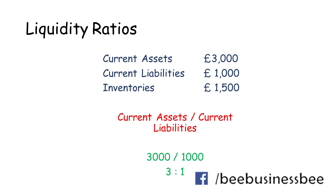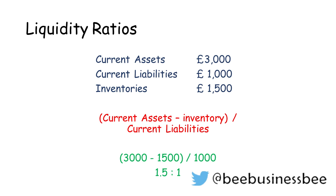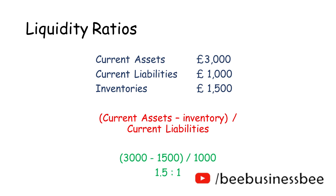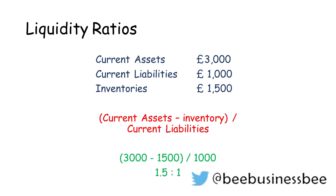Anything above 2 to 1 is seen as really strong performance for an organisation. For the liquid capital ratio using the same data, we do current assets minus inventory, then divide by current liabilities. This discounts stock from our current assets. That gives us 1.5 to 1 — £1.50 in current assets for every £1 in current liabilities. This is an exceptionally strong position. Accountants accept that even 0.75 upwards is still fairly okay, because remember, this ratio doesn't count stock or inventory.